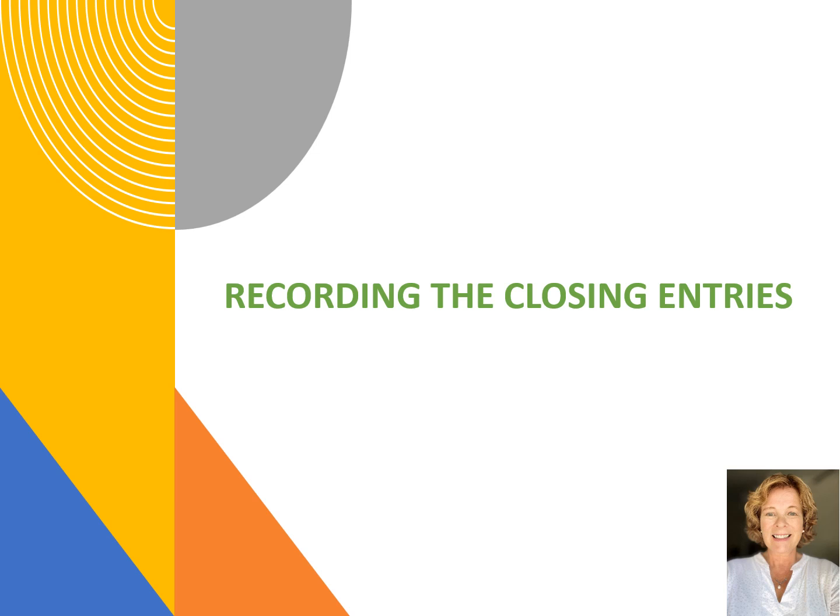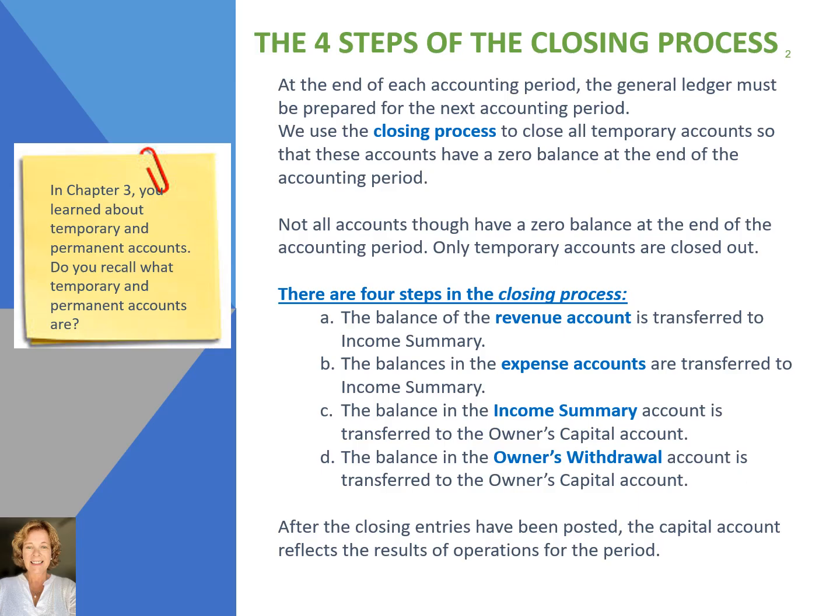Let's talk about the closing entries and why accountants record them. There are four steps or tasks that accountants must complete to close the ledgers for any accounting period. Why do accountants close the ledgers? We spend all this time setting up all these accounts and posting to them, so why are we now closing them? It is important that accountants be able to report on each accounting period separately, rather than commingle the numbers with another accounting period.